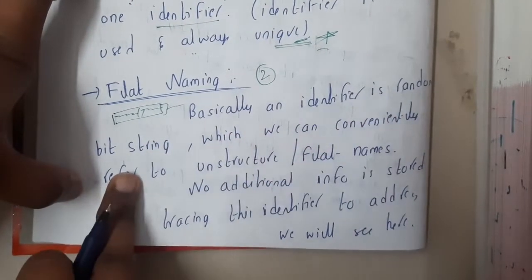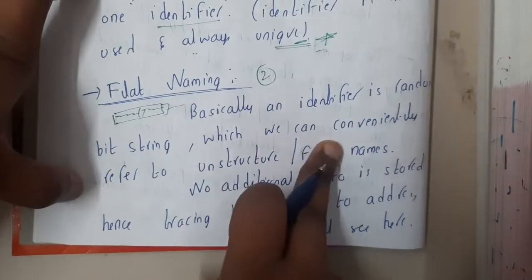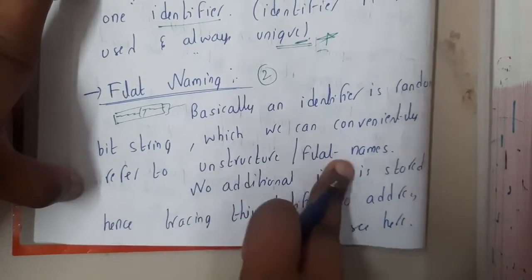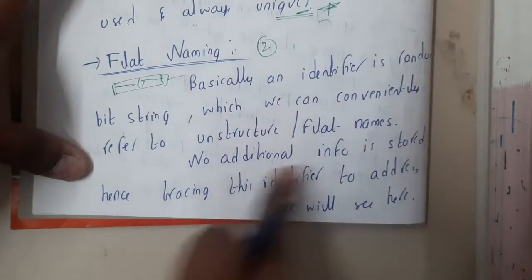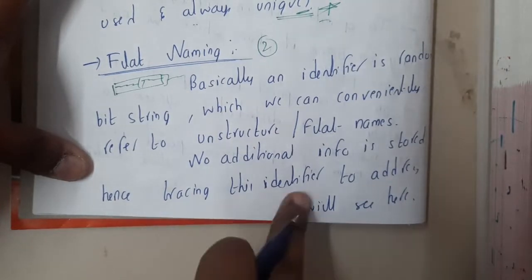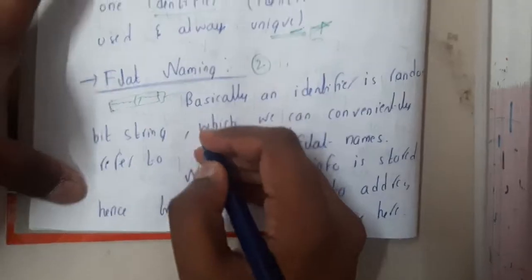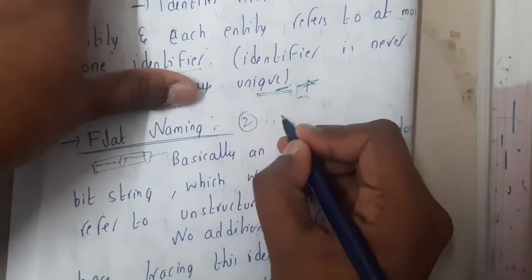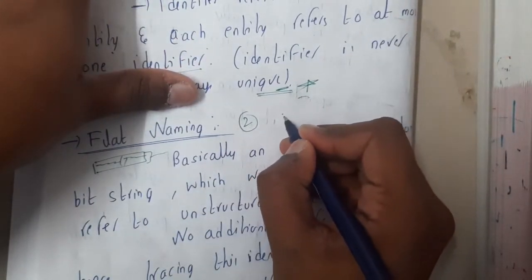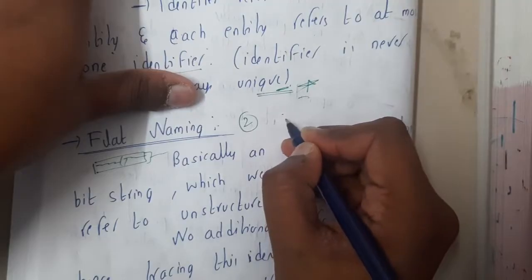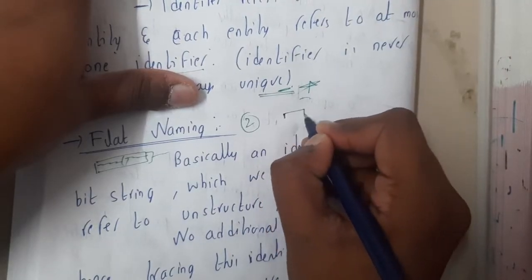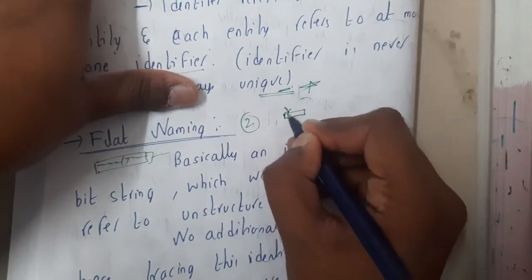Basically, an identifier is a random bit string which we can conventionally refer to as unstructured or flat naming. No additional information is stored, hence tracing the identifier to address is a challenge. For example, in networking we studied about multiple protocols. Basically, for one protocol if you give your IP address, it will do some kind of process and say this IP address is a MAC address or vice versa.